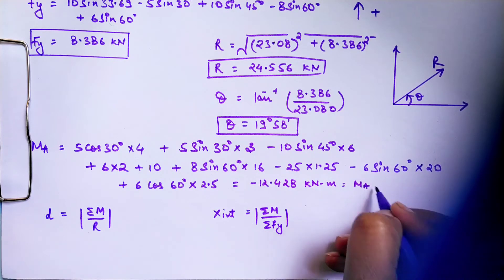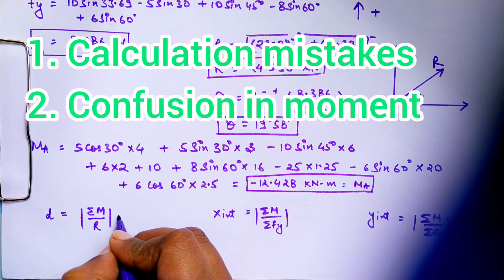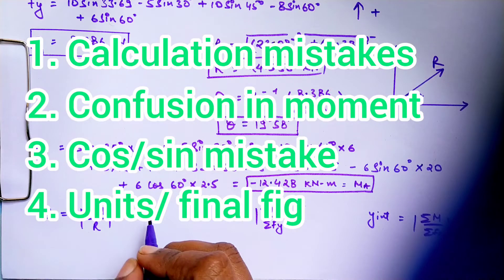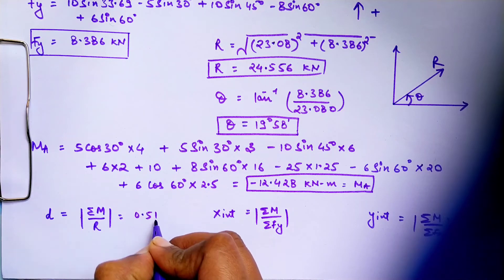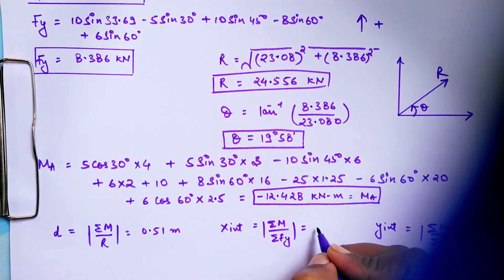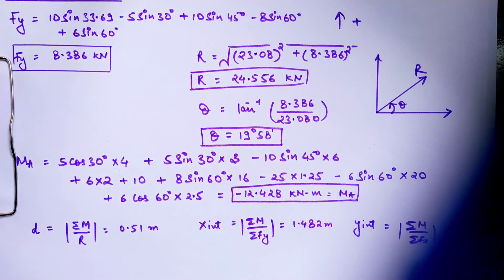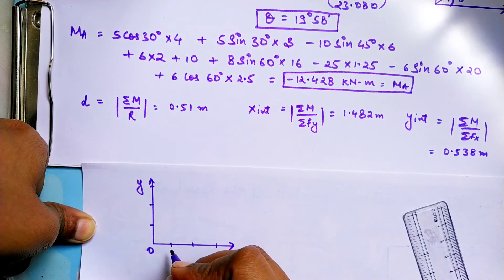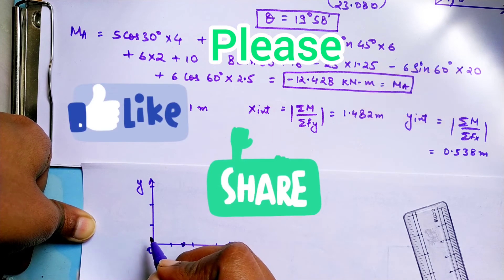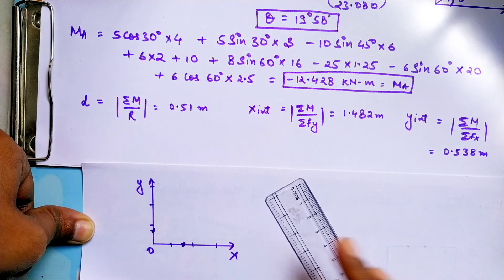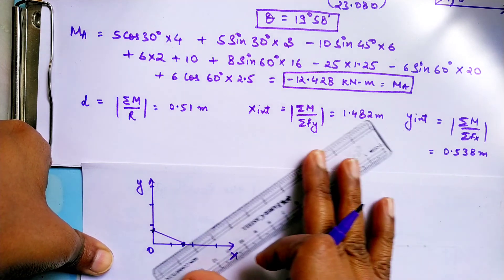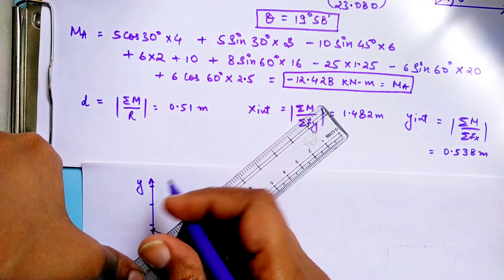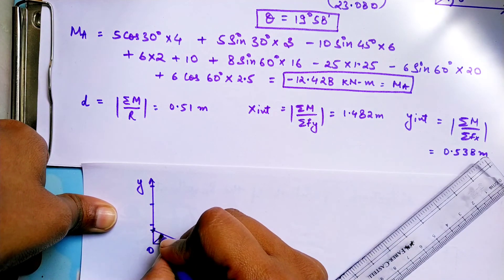Many students face the problem of not calculating the moment properly, so if the moment is incorrect, the x-intercept and y-intercept will also be incorrect — be very careful when substituting values and calculating final answers. We have now calculated the x-intercept and y-intercept. The last step that most students skip — and lose a mark for — is plotting this in the figure. Plot the intercepts, and draw a perpendicular from the origin to the resultant line; that perpendicular distance is your d.